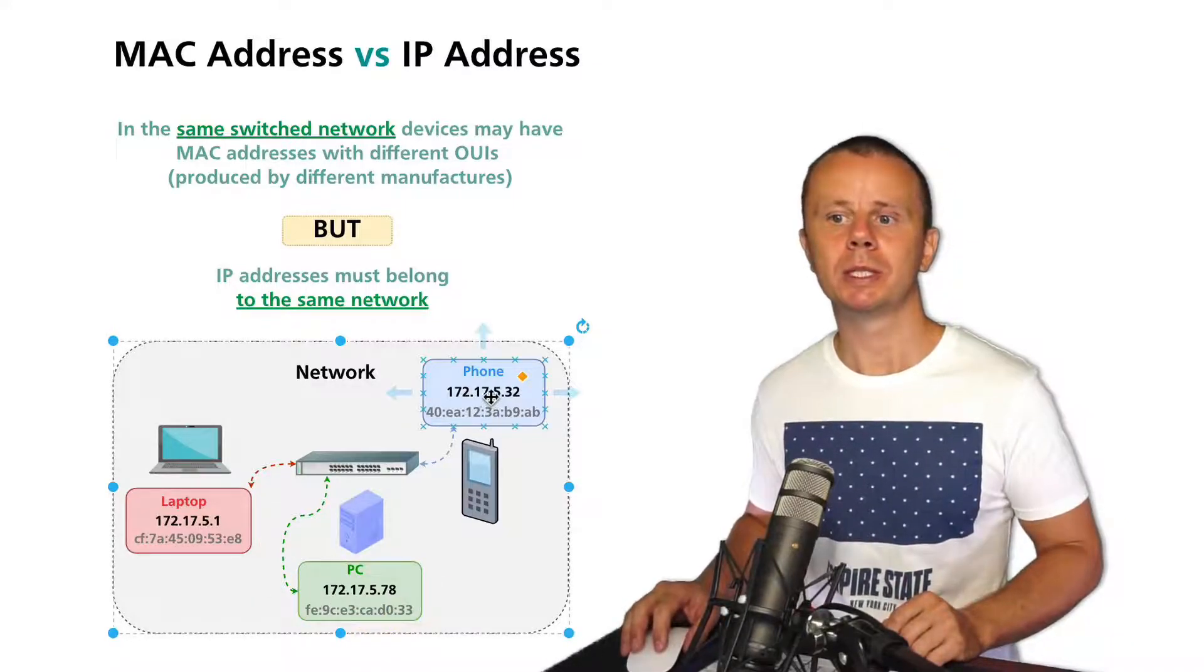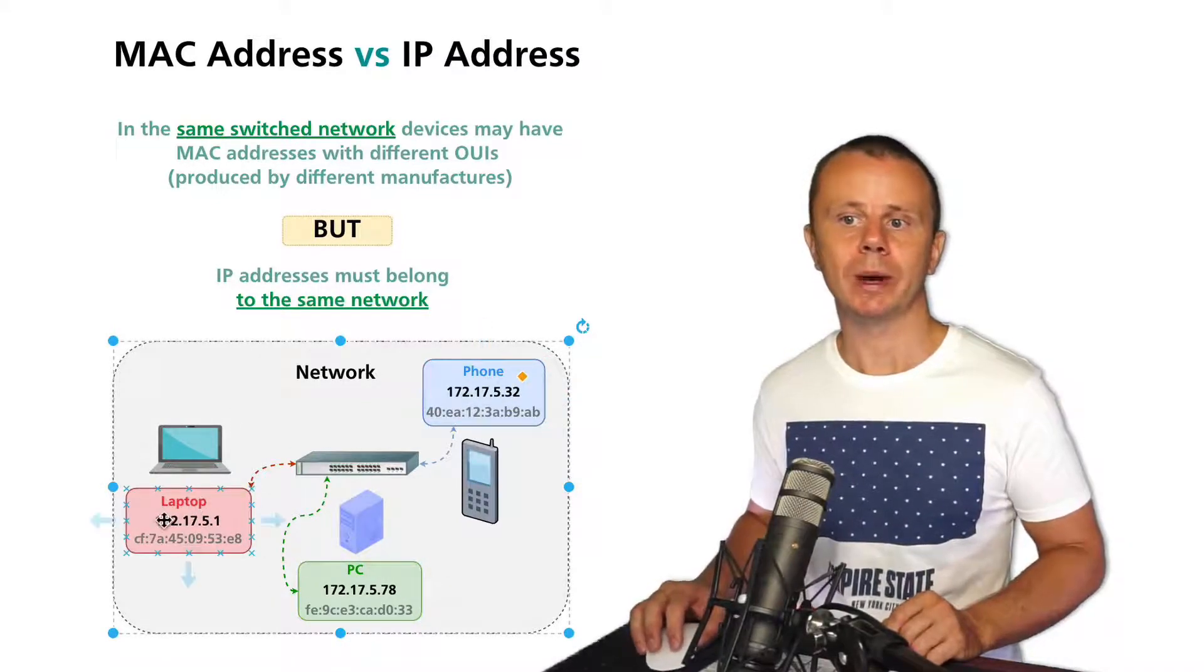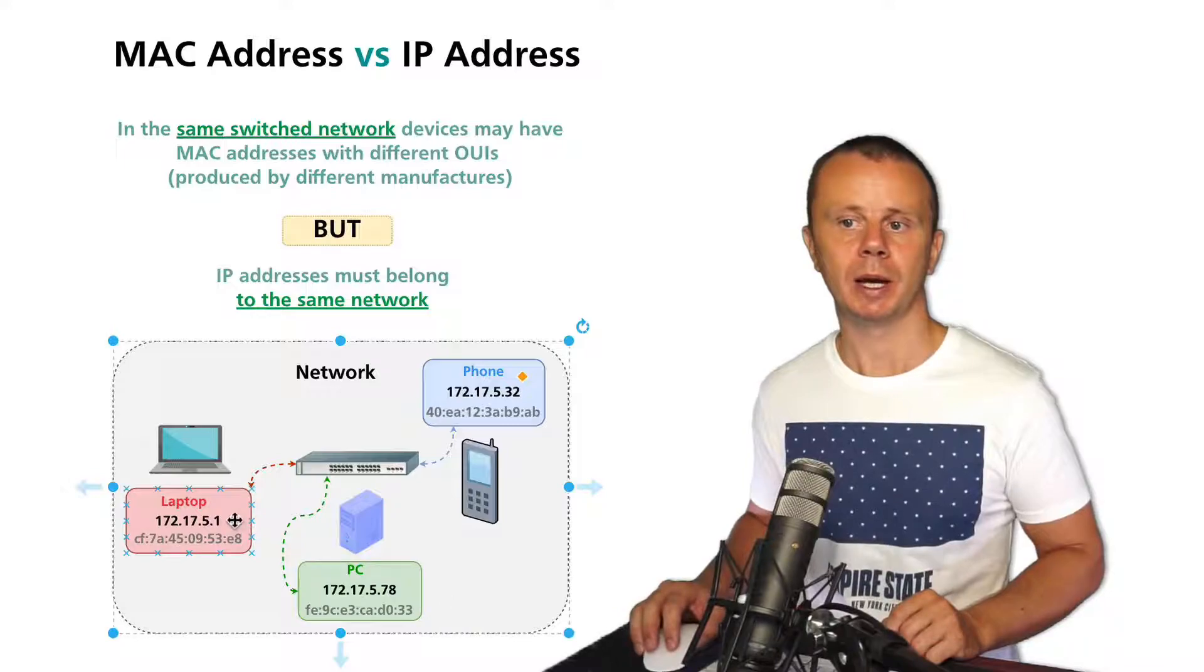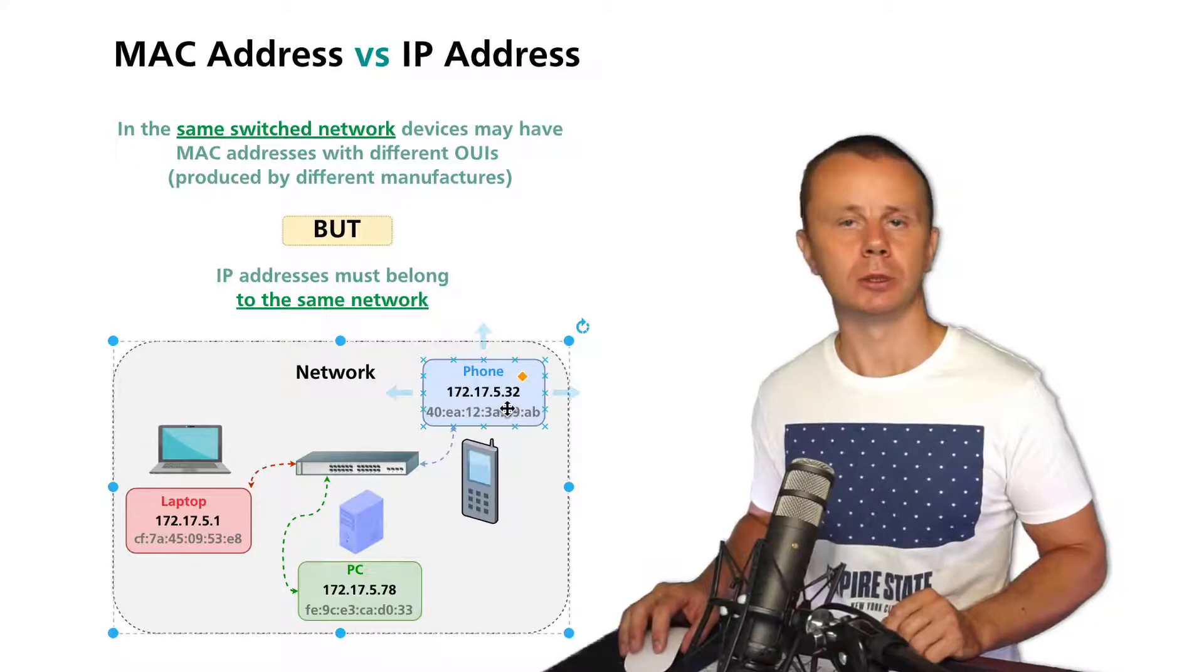On this example you see that all IP version 4 addresses start with 172.17.5, and afterwards in the last octet there are differences. So here this IP address ends with dot 1, this ends with dot 78, and this ends with dot 32.